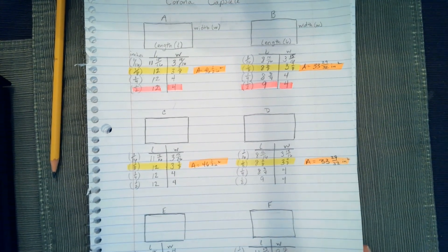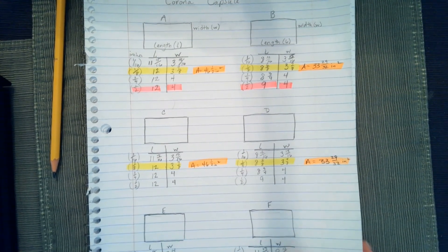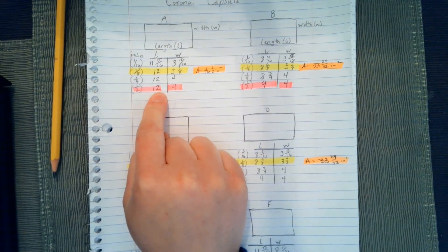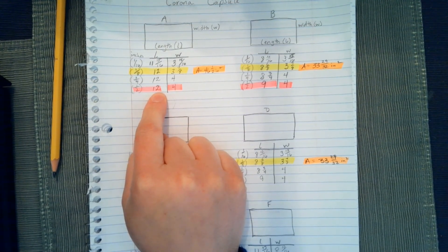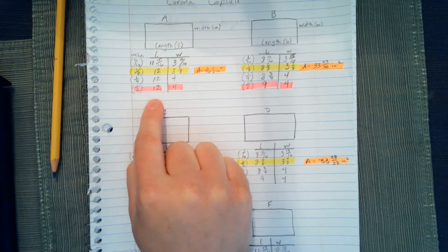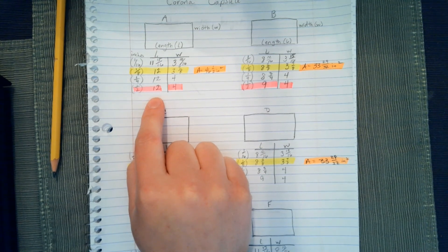We're going to take these measurements, and we're going to multiply them together. Some of you might have fractions, so you'll have to use your fractions. Some of you won't. You'll have whole numbers. In this case, I have whole numbers. But I will give you an example of one that does have a fraction.